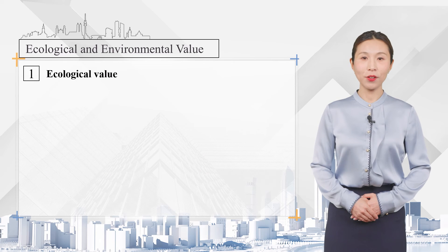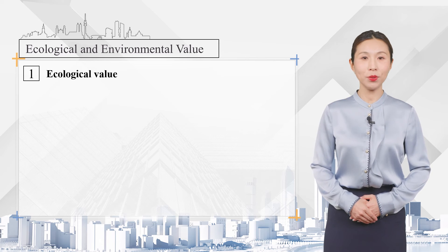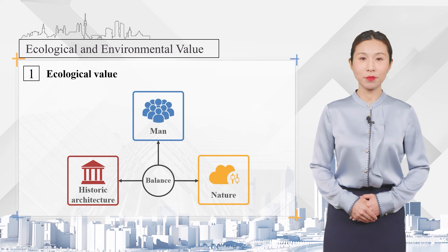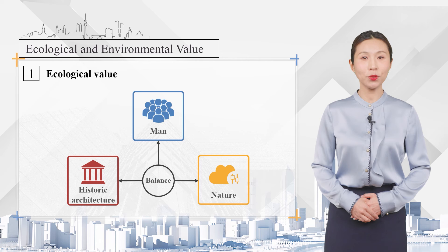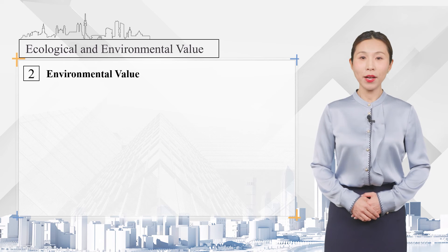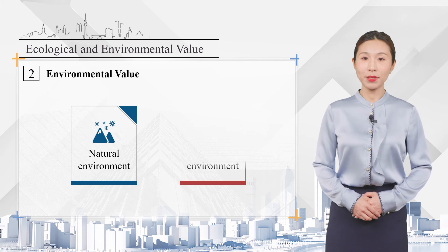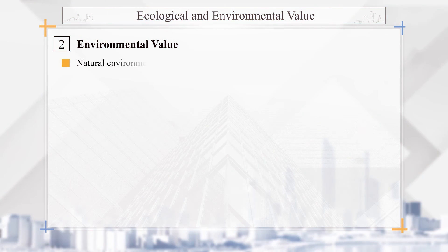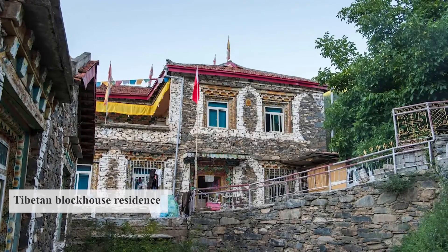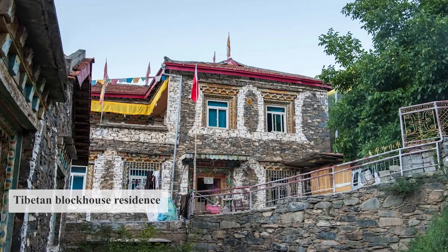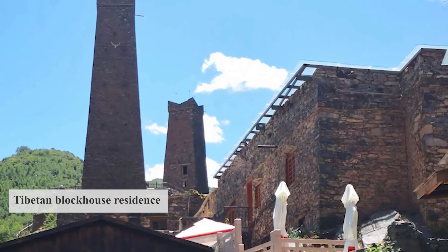The ecological value of historic buildings refers to some value acquired because it has established a good balance between architecture, man, and nature. The demolition and rebuilding of historic buildings is a break from this good balance. The environmental value includes two aspects: natural environment and cultural environment. Natural environment refers to the degree of response of historic buildings to the particularity of natural climate and geographical conditions — for example, the bunker houses are a typical representative of natural climate and geographical environment.